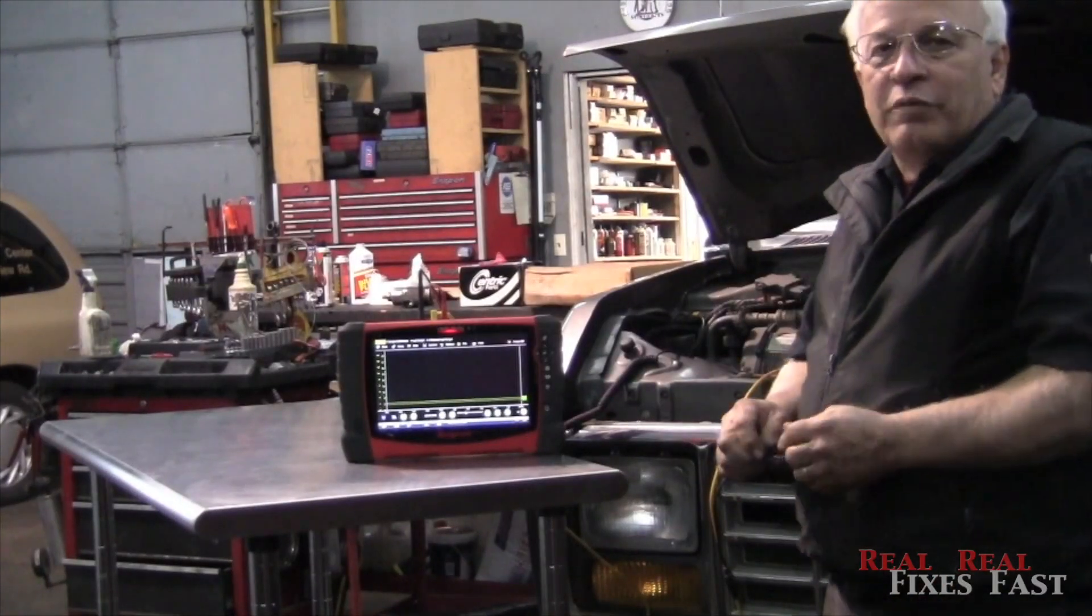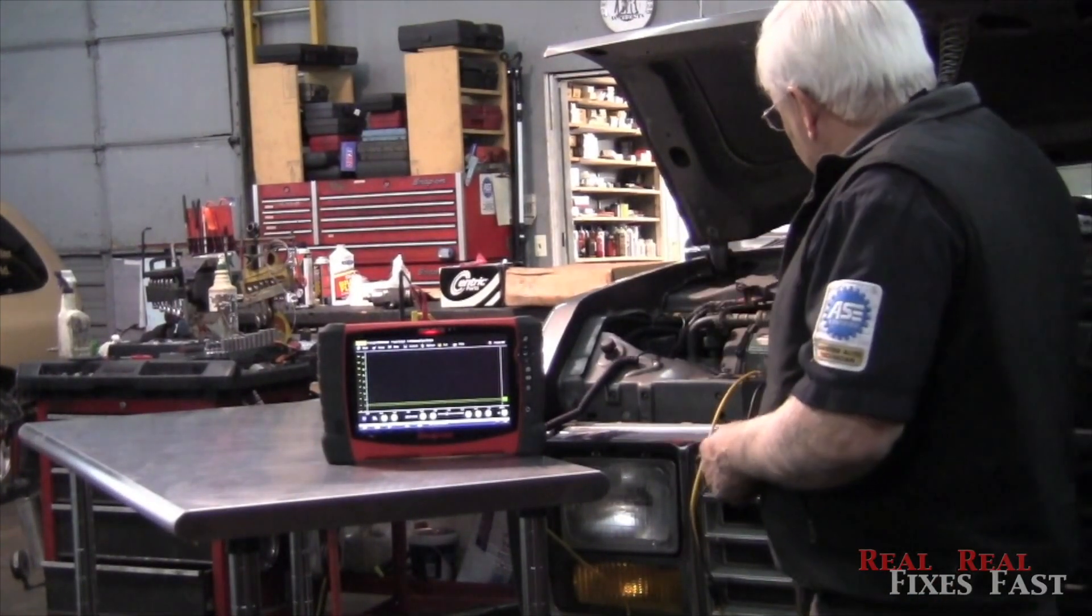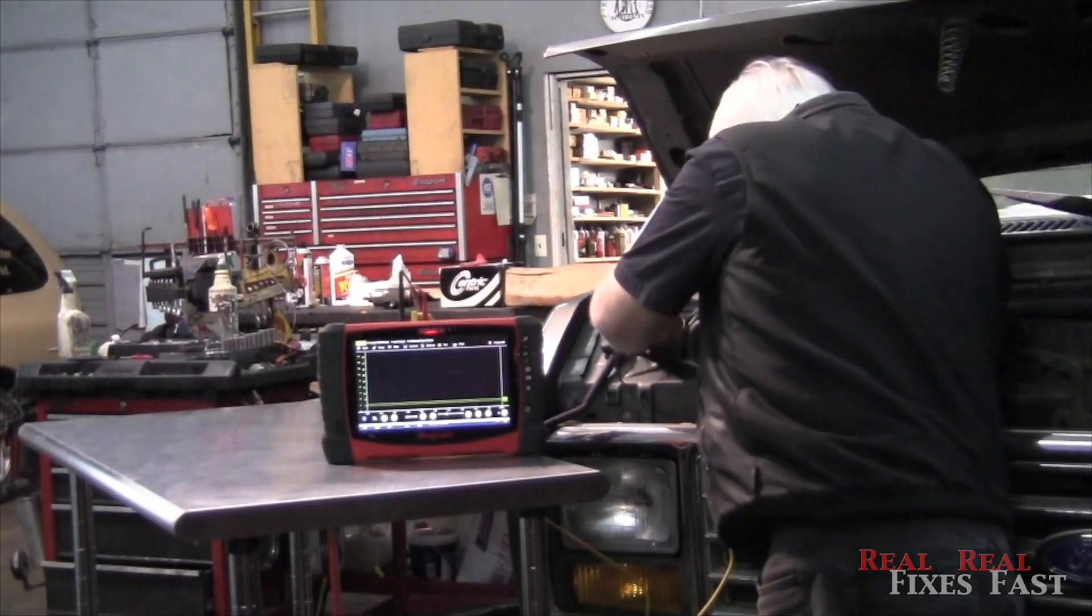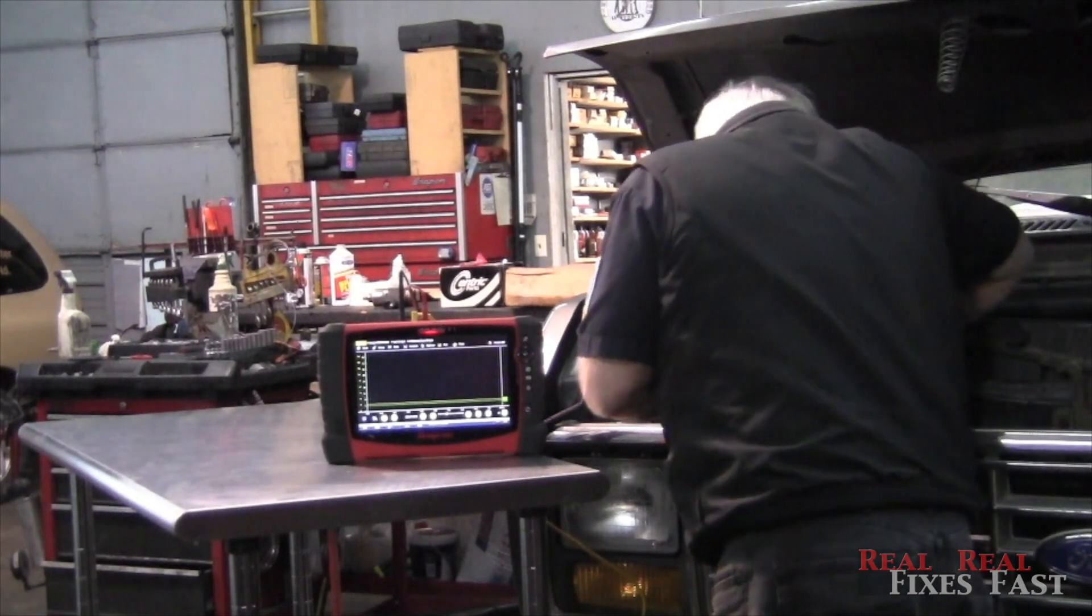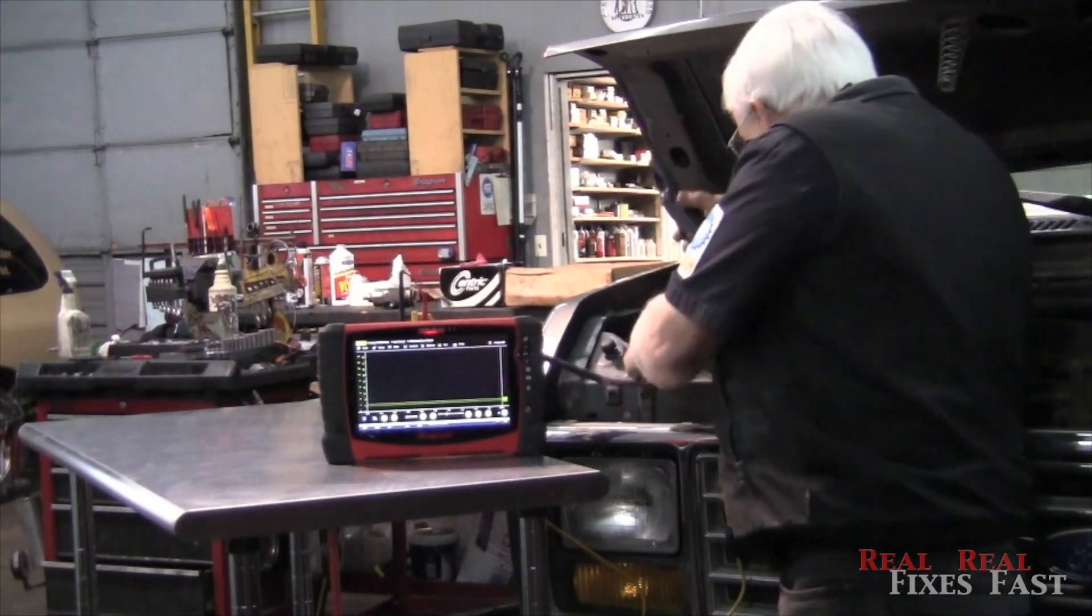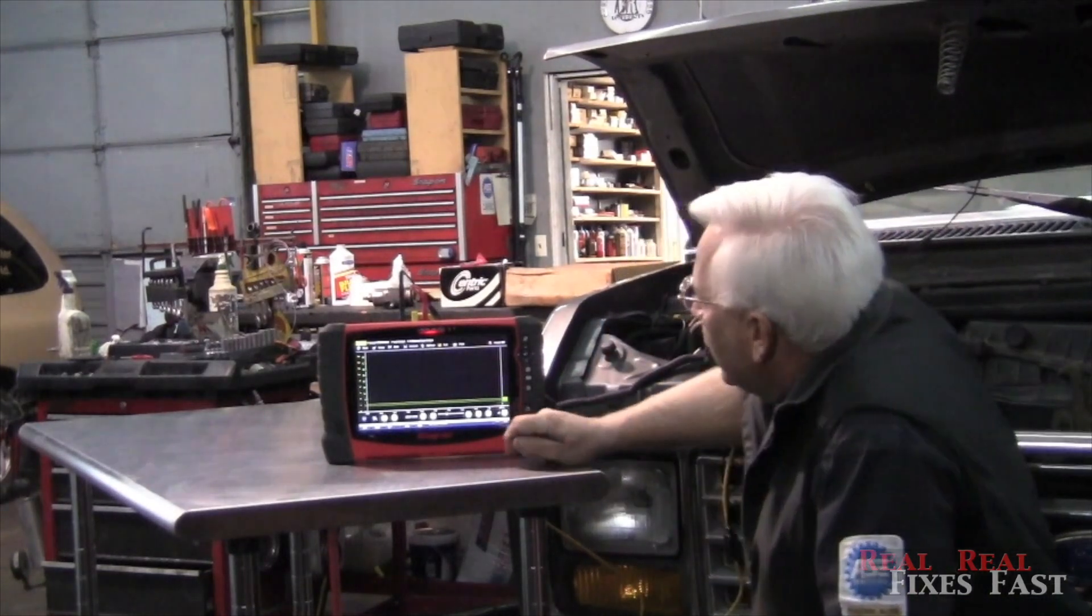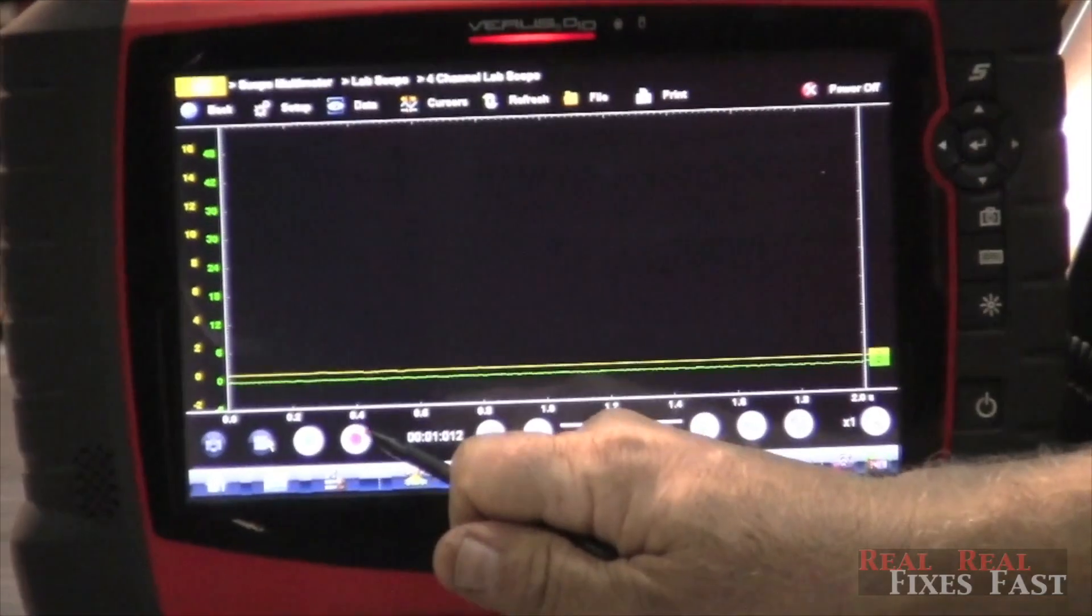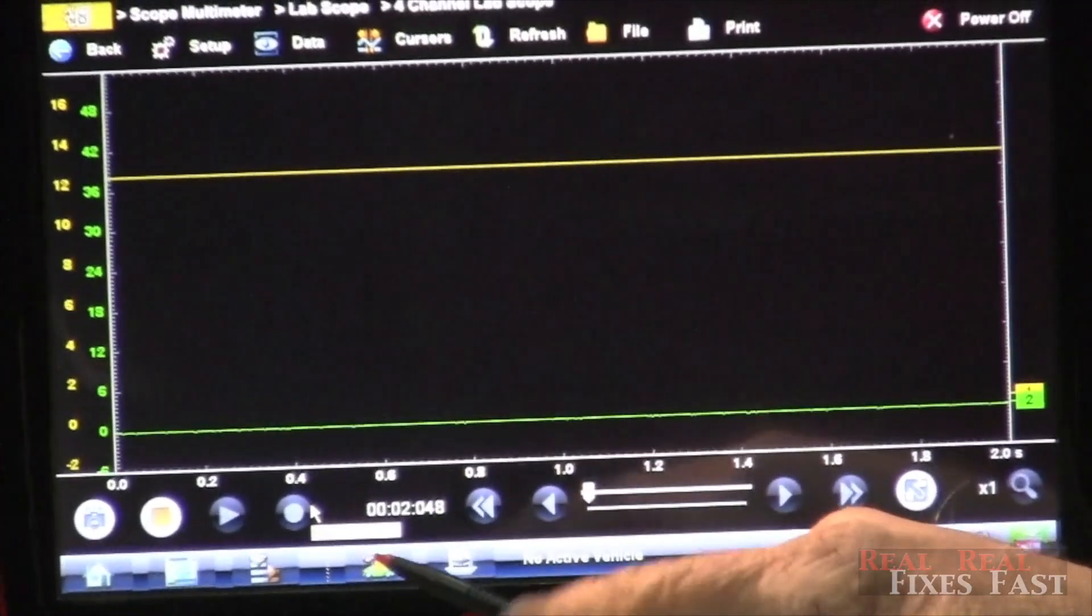Now we move over to a 91 E150 Econline Van. We're going to hook it up the same way. We're going to put channel one about the battery. We're going to take our amp clamp and put it around the wire to the starter. Now let's look at our signal. Okay, let's crank the engine.